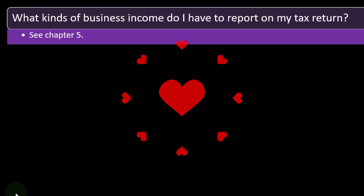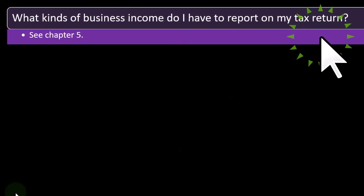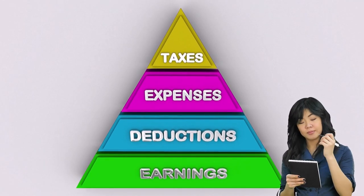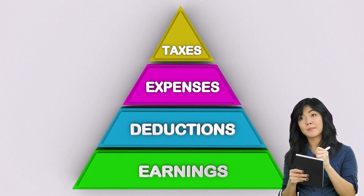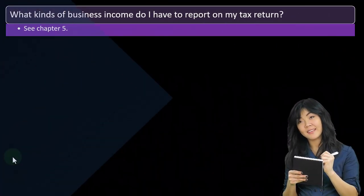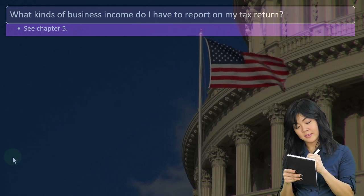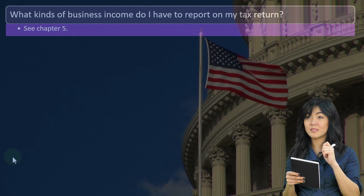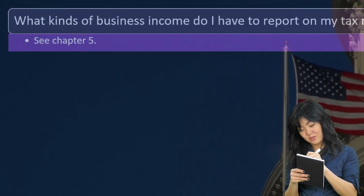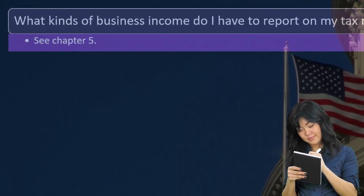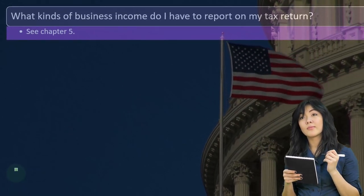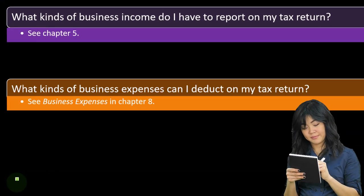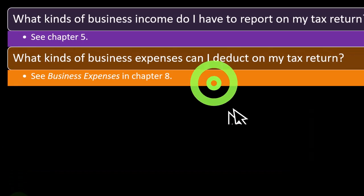What kind of business income do I have to report on my tax return? Income is generally bad for taxes — the IRS requires you to report all income unless an exception is specifically provided. Questions arise around which income goes on Schedule C versus elsewhere on the return, and whether there are any benefits to having it reported in one place versus another. You can jump to chapter five of the publication for more detail.